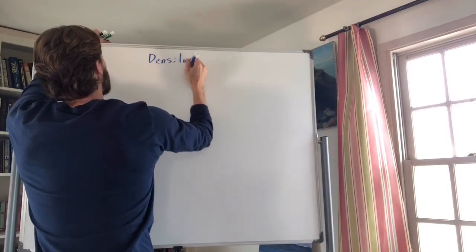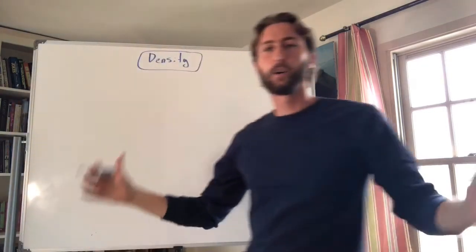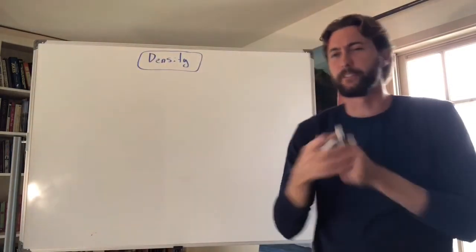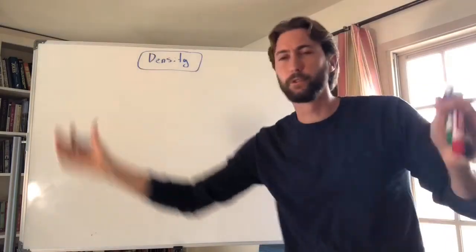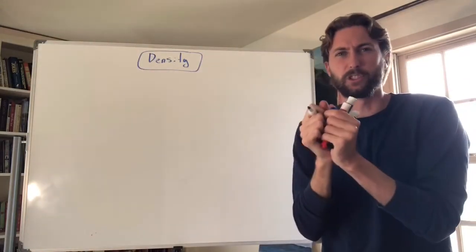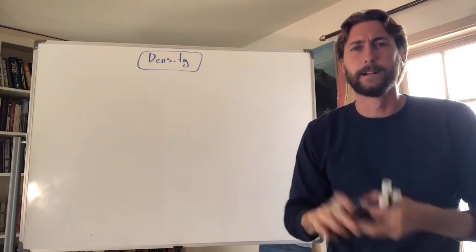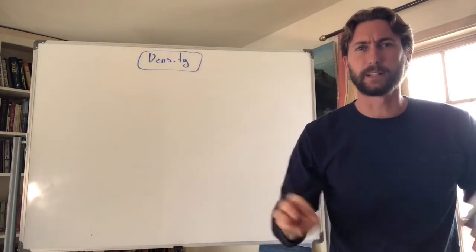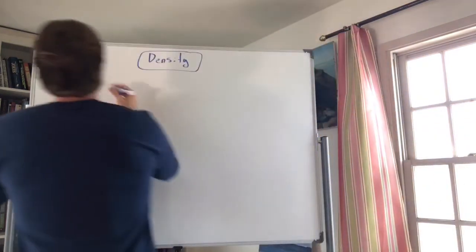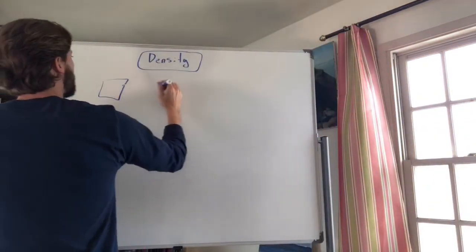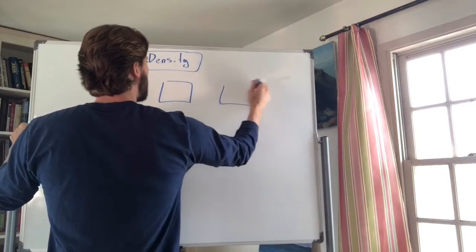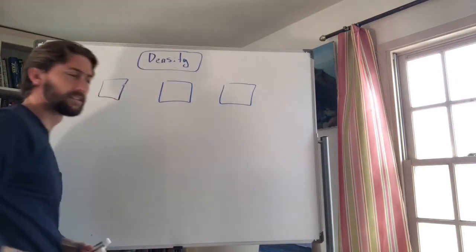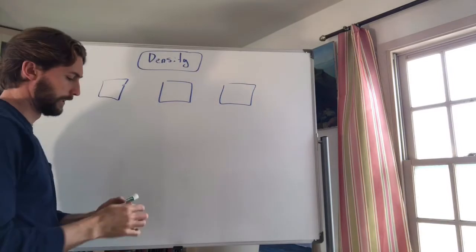Density means how closely compacted something is. A rock is way more dense than air — we can move through air but not through a rock because the molecules are so tightly packed. We'll use three boxes — Box A, Box B, and Box C — each containing four dots to illustrate.